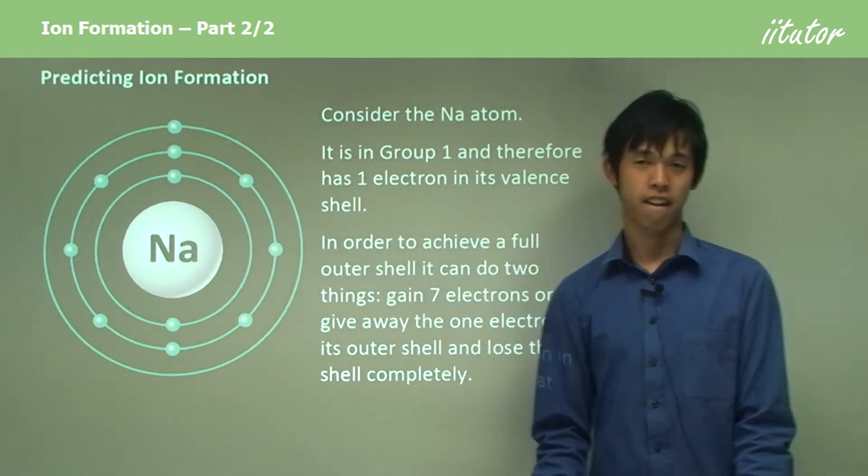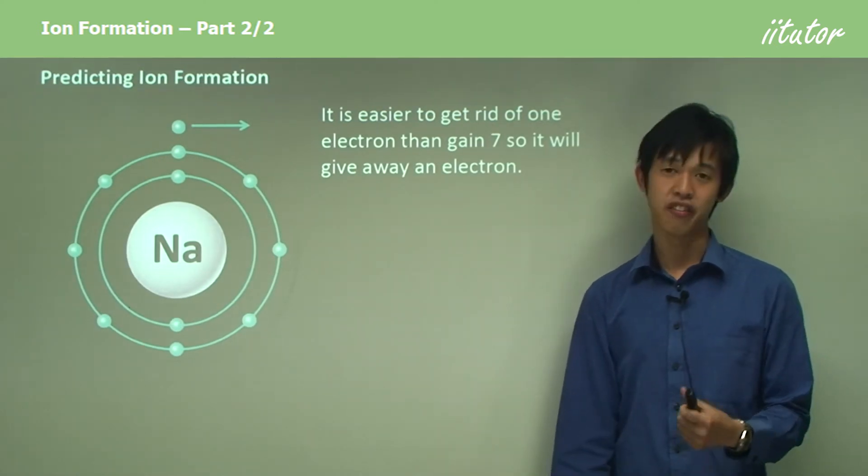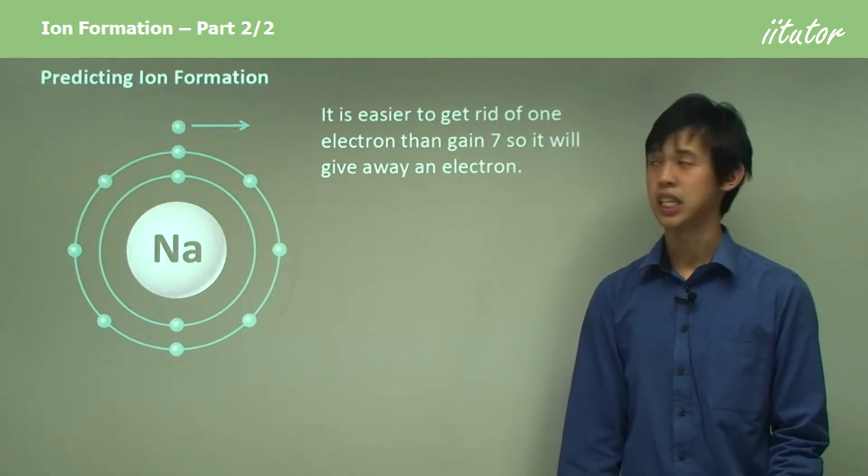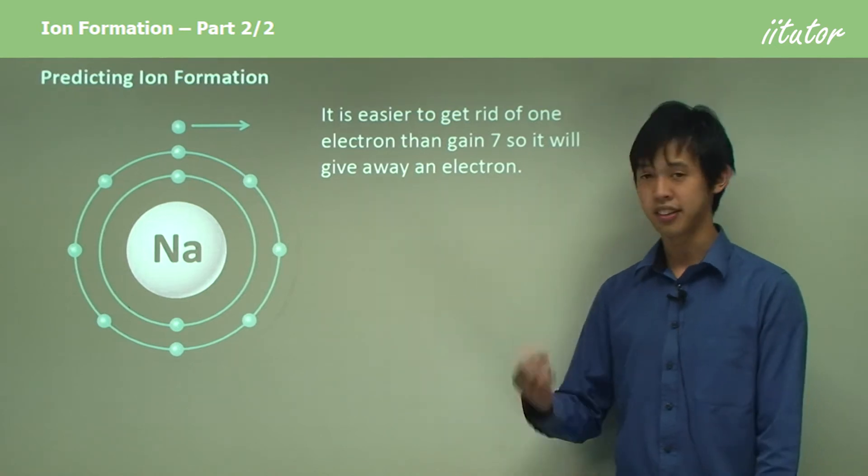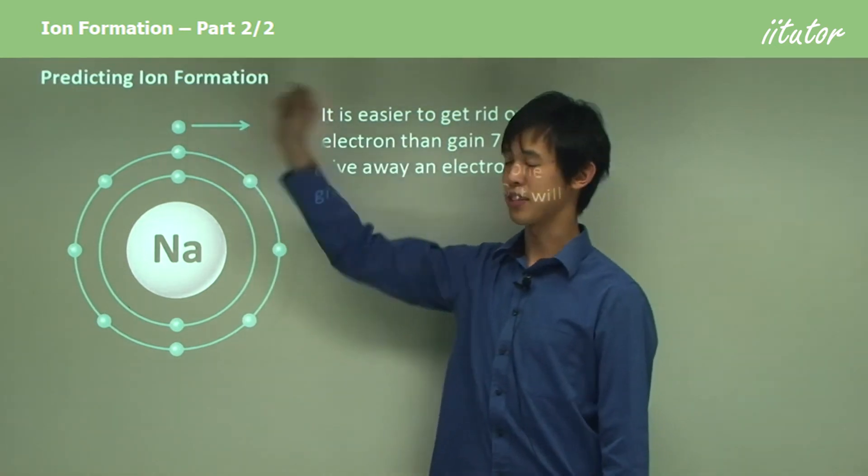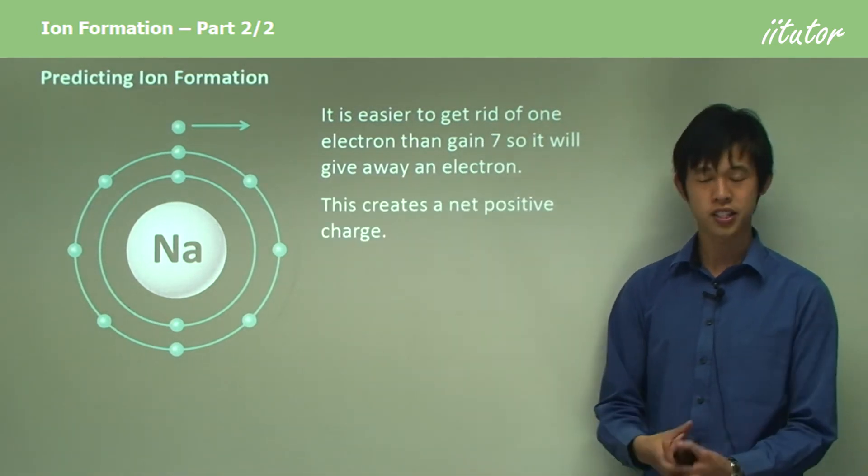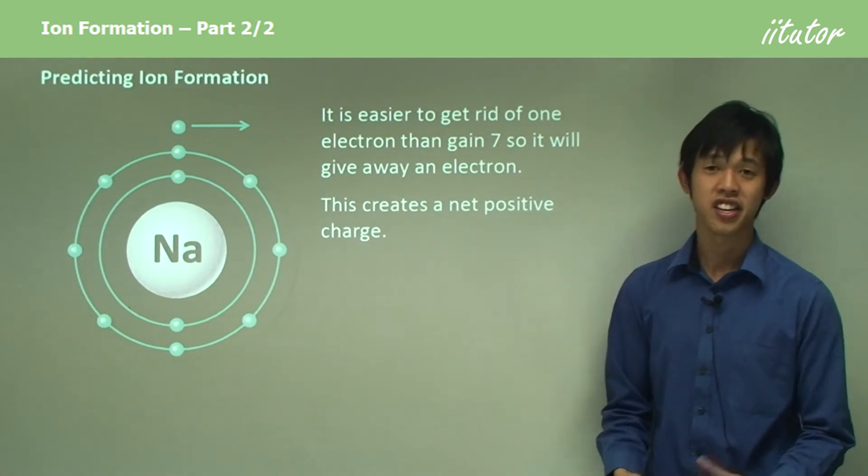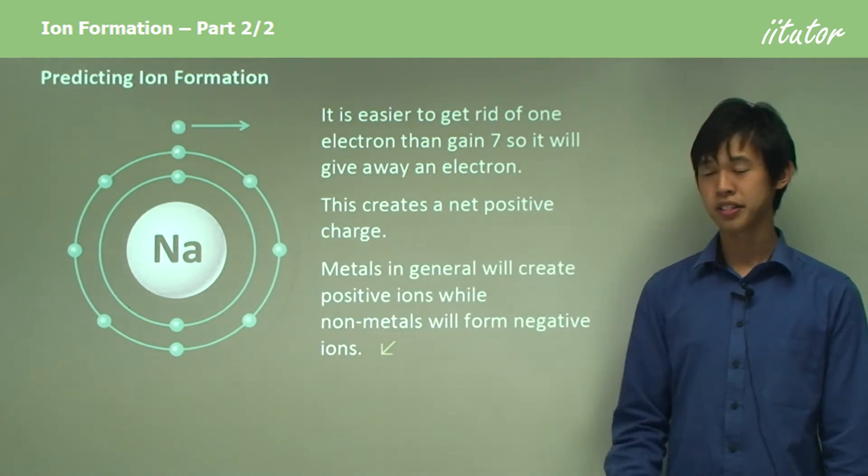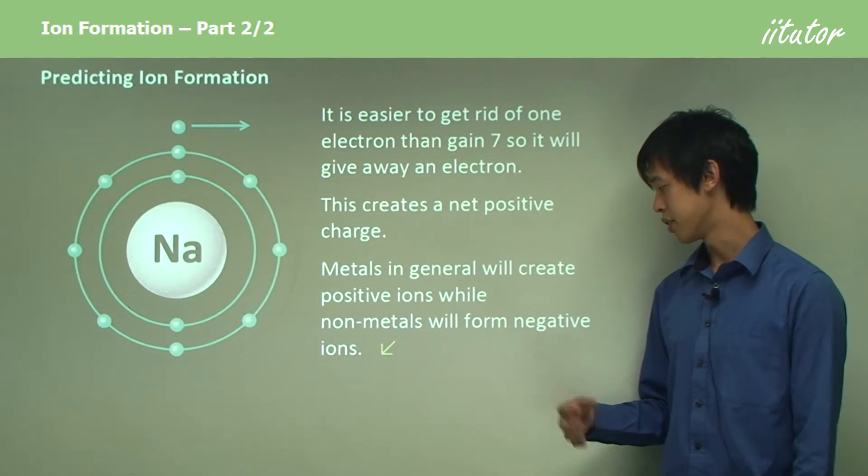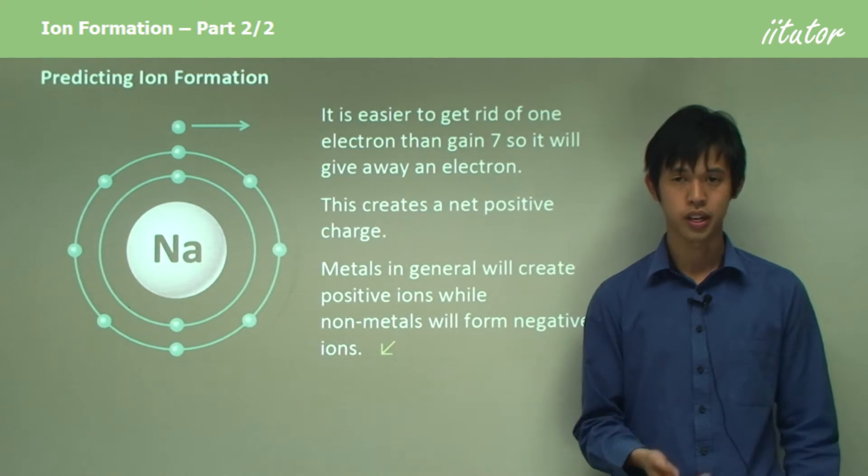It's easier to get rid of one electron than gain seven, so the natural thing to do is get rid of that one electron. Because it's lost that electron, it's got more positive charges than negative charges, so it creates a net positive charge, which means it becomes a positive ion. Metals in general will create positive ions while non-metals will form negative ions. That's in general - sometimes there are exceptions, but most of the time that's true.